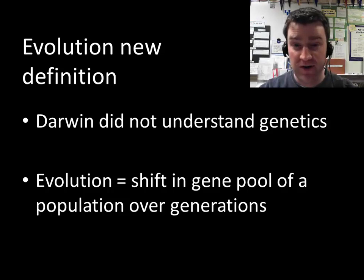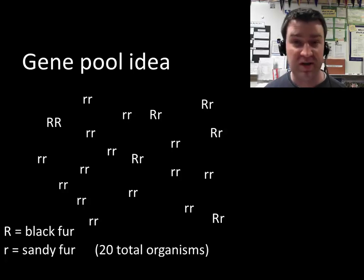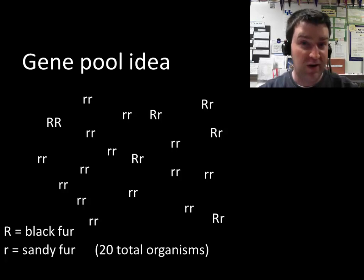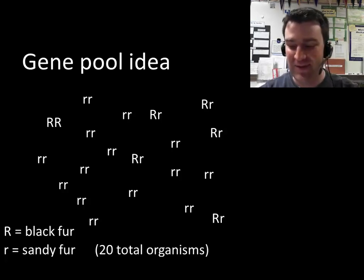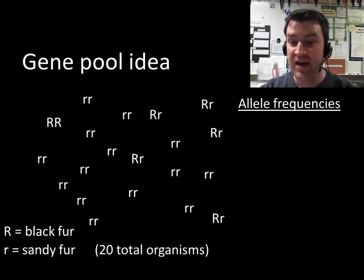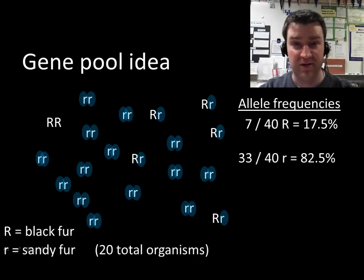To give a simple example of how evolution of a gene pool might work, let's assume we've got a small population of organisms and we're going to examine one gene — a simple Mendelian gene with two alleles, one dominant over the other. Let's say black fur is dominant over recessive sandy. If we could count all the alleles in this population, maybe 17% of the alleles are dominant and 82% are recessive.